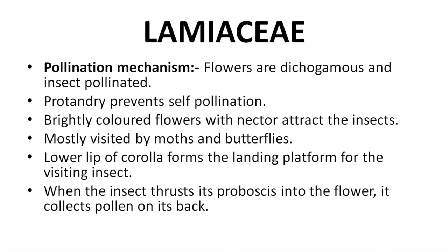Pollination mechanism is very important. Here the lever mechanism is seen. Flowers are dichogamous and insect pollinated. Proteandry is seen — the androecium matures earlier than the gynoecium to prevent self-pollination. Brightly coloured flowers with nectar attract insects; the flowers are mostly visited by moths and butterflies.